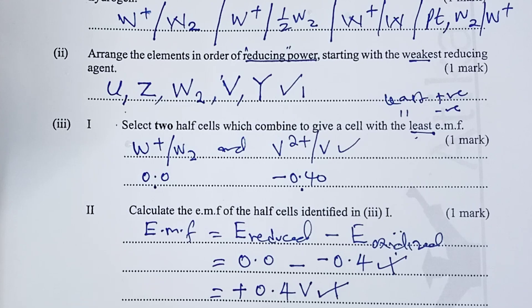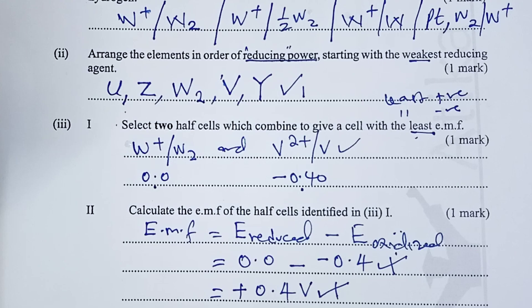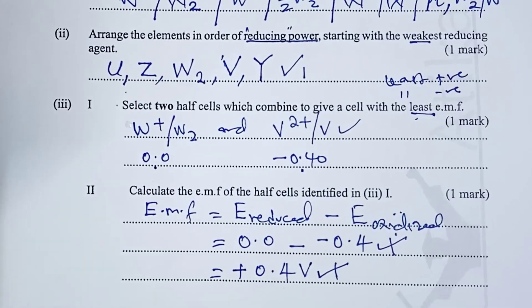That marks the end of 2018 KCSE Paper 2 Chemistry, question number three, which tested on three areas: Temporary and Permanent Change, Charles Law, and Electrochemistry. We wish you all the best in your revision, and keep it, the Kenyan teacher.